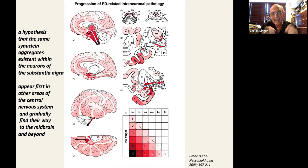So, after his studies, he concluded, and he promoted a hypothesis that is still viewed as an important launching path for our understanding of the disease, is that the same synuclein aggregates that we just saw, the ones that are existing within the neurons of the substantia nigra, appear first in other areas of the central nervous system and gradually find their way to the midbrain and beyond.